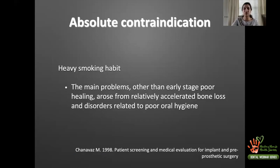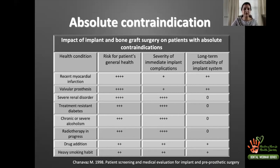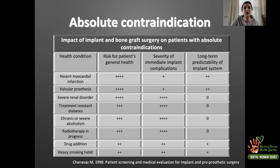This table from the same group shows absolute and relative contraindications. If you look at treatment-resistant diabetes, the severity of immediate implant complications is very high — four-plus signs — the same as severe alcoholism and radiation therapy. These must be taken into consideration when such patients present at your clinic seeking implant treatment.